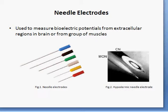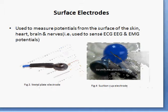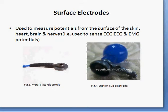Then about the surface electrodes, used to measure potentials from the surface of the skin, heart, brain, and nerves. Used to sense ECG, EEG, and EMG potentials.